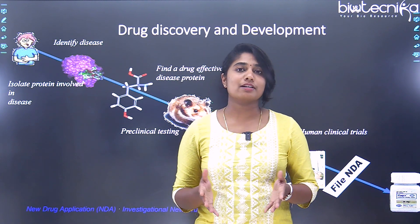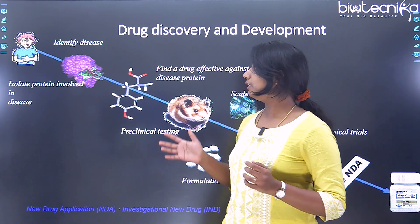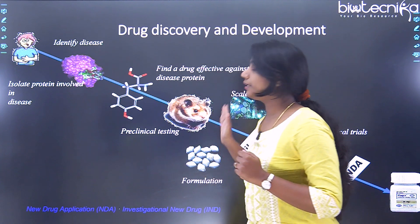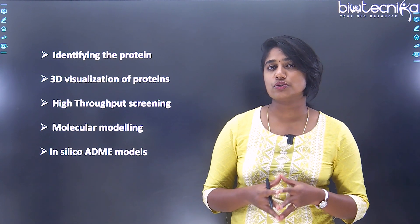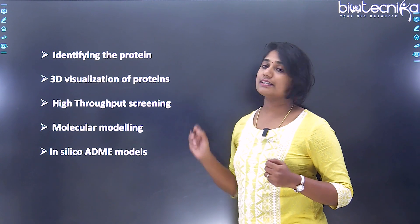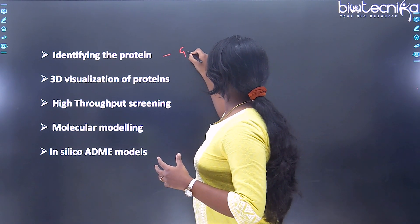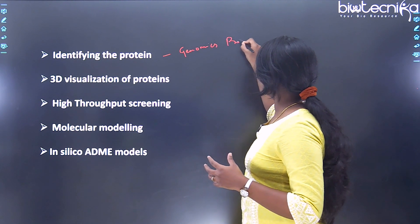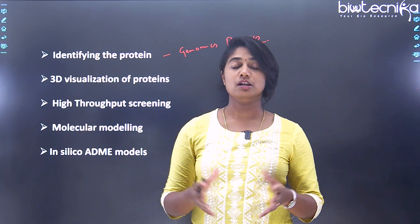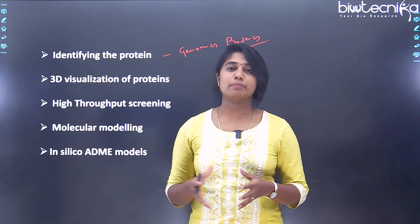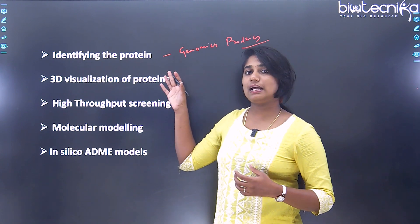Where is bioinformatics going to play a role in this? Almost half the work can be done with bioinformatics itself — right from identifying the disease through to preclinical studies. The first role is identifying the protein. Genomics and proteomics studies help identify the disease-causing protein. There are many databases available through bioinformatics where protein structure, sequence, and everything else is available, which definitely helps in identifying the protein.